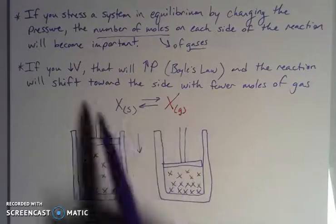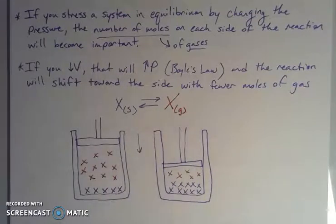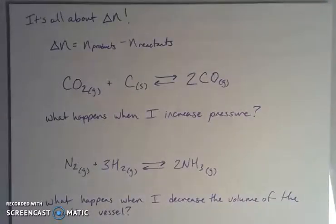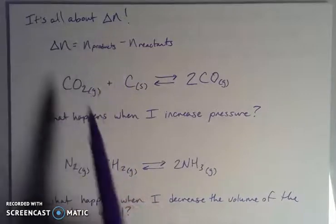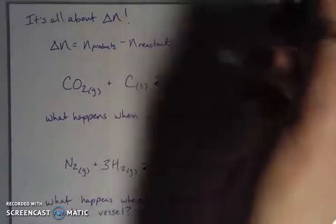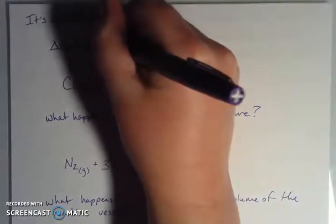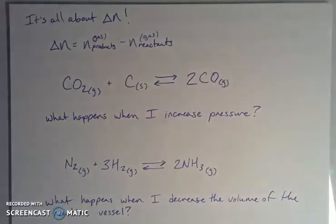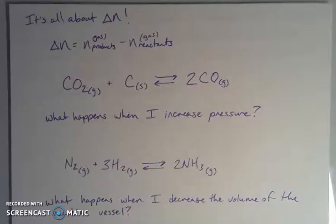On the product side there's one mole of gas, and on the reactant side there are zero moles of gas. So what we're really talking about is the difference — the change — which we call delta n, where n is the number of moles. Delta n equals moles of gaseous products minus moles of gaseous reactants. The other phases don't matter here because gases are the ones taking up space and are most influenced by pressure changes, far more than liquids, aqueous solutions, or solids.